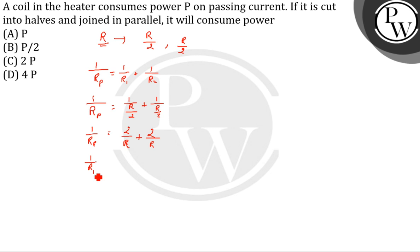So 1 by Rp is equal to 4 by R, or we can say Rp equivalent resistance equal to R by 4.